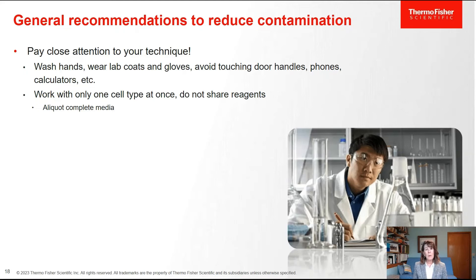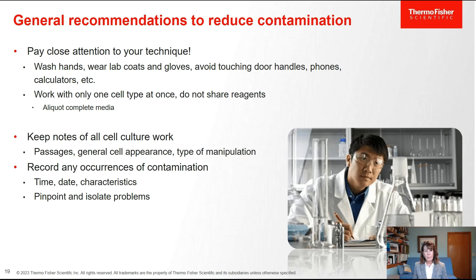Here are ways to reduce the chances of contamination. Number one: pay close attention to your technique — do all of the things you know you're supposed to do. Use proper aseptic technique. Wash your hands when you go into the lab. Wear lab coats and gloves. Don't answer texts while working in the hood; if you must, put on fresh gloves before returning to the BSC. Work with only one cell type at a time. Don't share reagents across different technicians or cell types. Aliquot your complete medium so one aliquot is used per cell type.